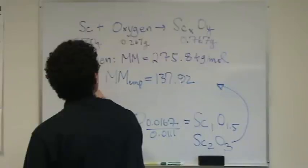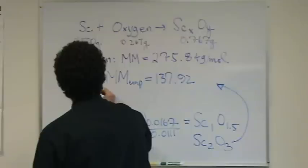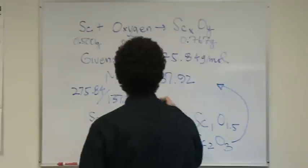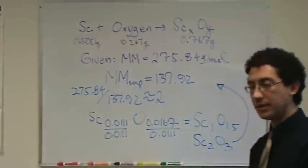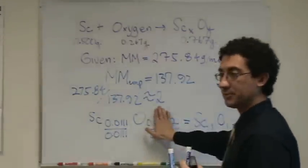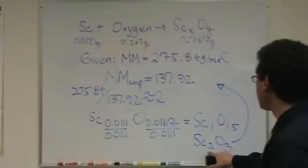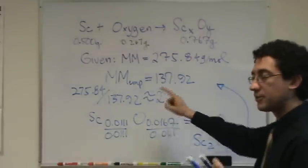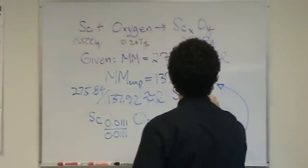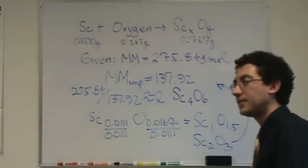It's 275.84 divided by 137.92. That's going to be approximately 2. If you do that calculation, you're looking for a whole number. If you do not get a whole number here, you definitely screwed up somewhere. So, this better be a whole number. Then, all you do is go multiply through the subscripts by this number. So, what's called your molecular formula is going to be Sc4O6. Is that okay? Any questions on that?